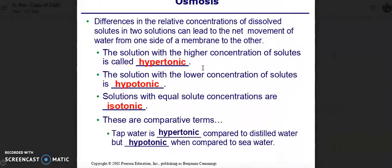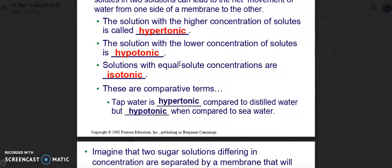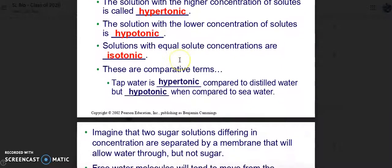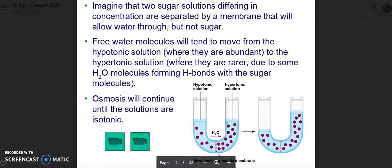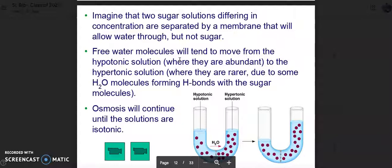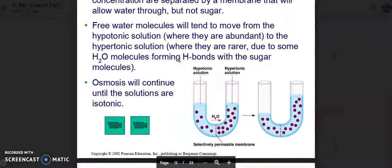Osmosis. Differences in the relative concentrations of dissolved solutes in two solutions can lead to the net movement of water from one side to the other. The solution with a higher concentration of solutes is called hypertonic, and the solution with a lower concentration of solutes is called hypotonic. Solutions with equal solute concentrations are isotonic. These are comparative terms. Tap water is hypertonic compared to distilled water, but hypotonic when compared to seawater. Imagine that two sugar solutions differing in concentration are separated by a membrane that will allow free water through, but not sugar. Free water molecules will tend to move from the hypotonic solution where they are abundant to the hypertonic where they are rare due to some H2O molecules forming hydrogen bonds with the sugar molecules.